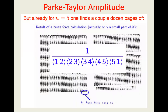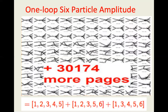For example, if you look at the five-point amplitude at tree level and use clever variables — so-called spinor helicity variables — all those 25 pages collapse to a single expression known as the Parke-Taylor amplitude, first written in the 1980s by Parke and Taylor. This is the kind of result we are looking for.